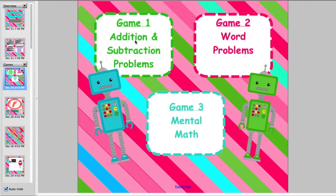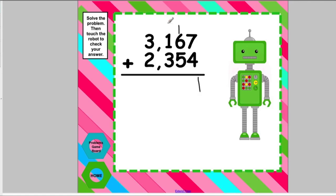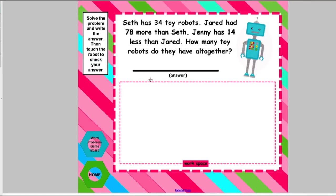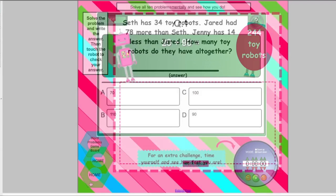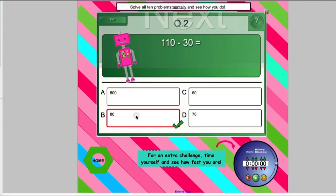In addition and subtraction robots, there are three different games. In the first game, students practice solving traditional addition and subtraction problems. In the second game, they solve word problems involving addition and subtraction. They self-check by touching the robot. The third game is addition and subtraction mental math. Students see how well they can solve all of the mental math problems.